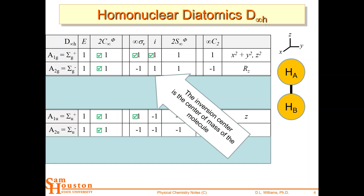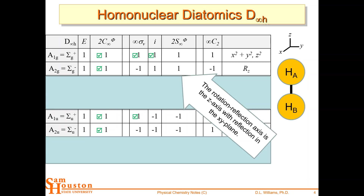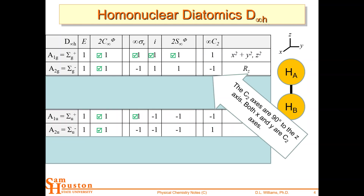We can continue confirming. The S∞ improper rotation — rotate an infinitesimal amount and reflect through — gives the same color, so plus one. The C2 rotation: the 1s orbital on A becomes 1sB and stays the same color, so plus one. You can see that if we take the 1s orbital on atom A and project it through the character table, the A1G projection survives on the other side — both orbitals would be the same color.